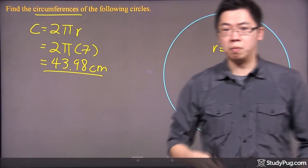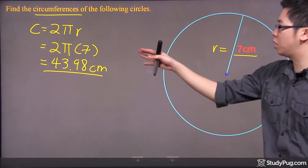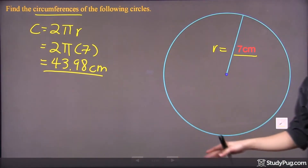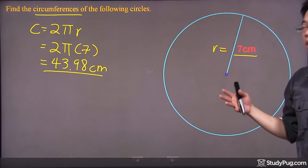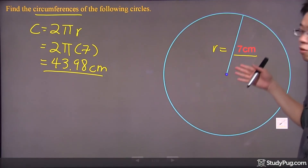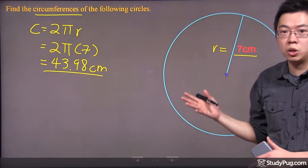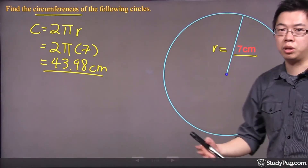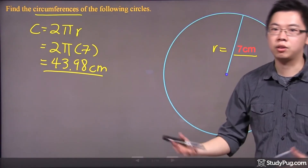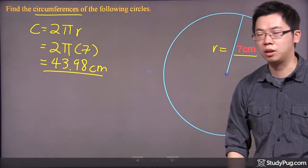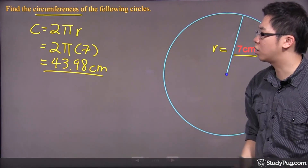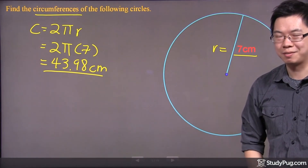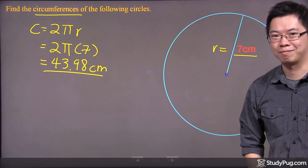So be careful — make sure you know your equation: the circumference is 2πr. Make sure the information provided to you is the radius. If it's a diameter, please cut it in half — that will give you the radius. Punch in the equation, then you should get the answer. Don't forget your units. Thanks for watching.